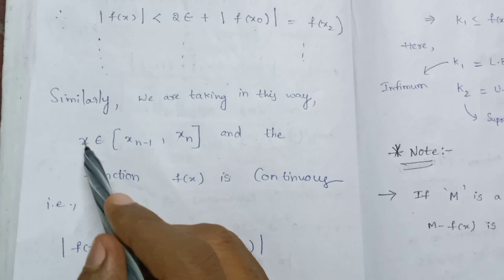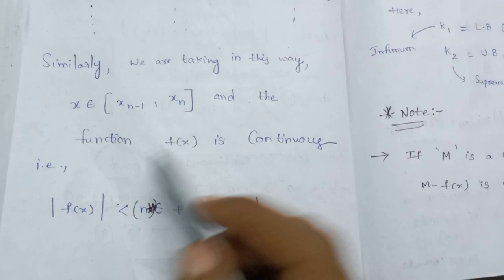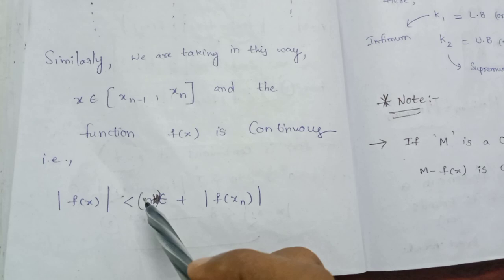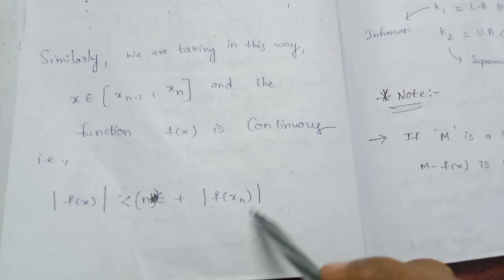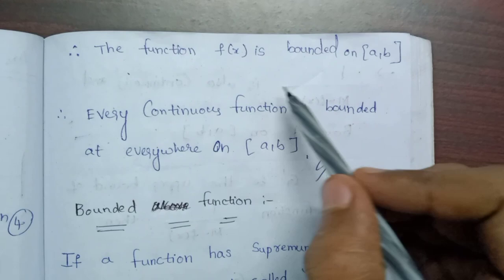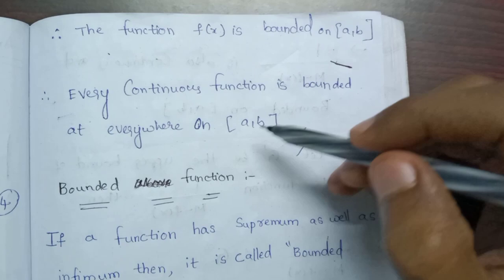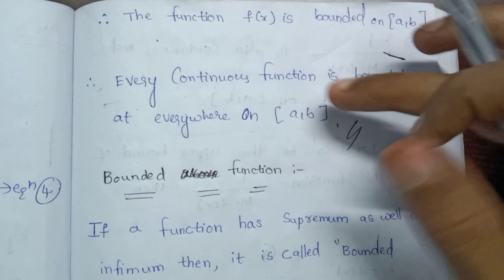Similarly, we are taking it in this way. x belongs to [xn-1, xn-1]. We are going to check it out, and the function f of x is continuous. If we have mod f of x is less than n*epsilon plus mod f of xn-1, it's done. Therefore, the function f of x is bounded on [a, b]. Every continuous function is bounded everywhere on [a, b].